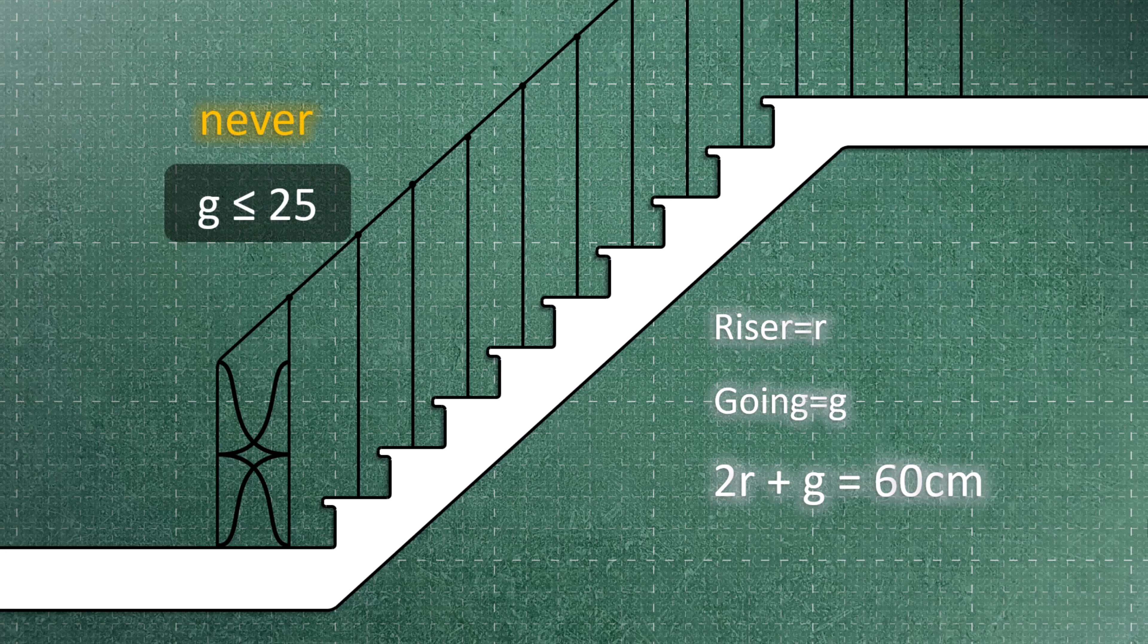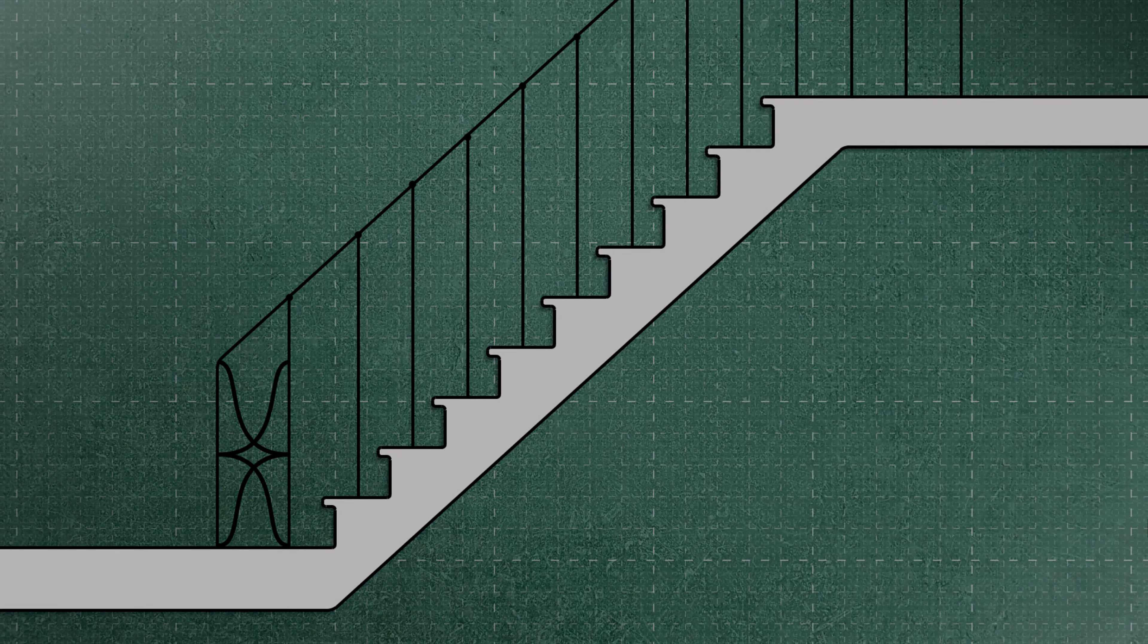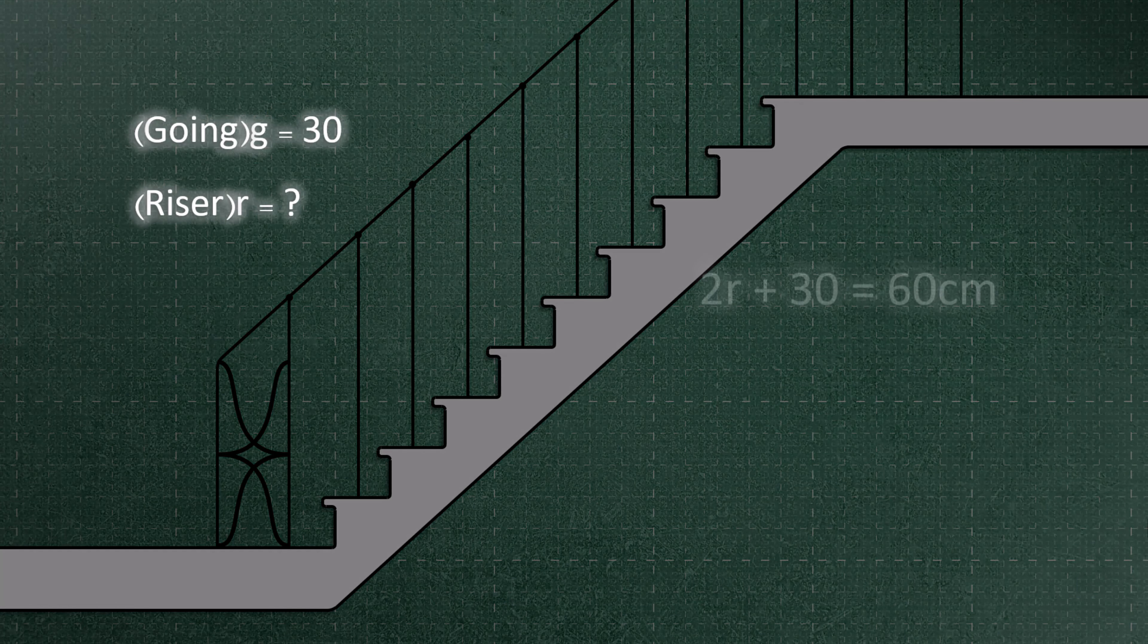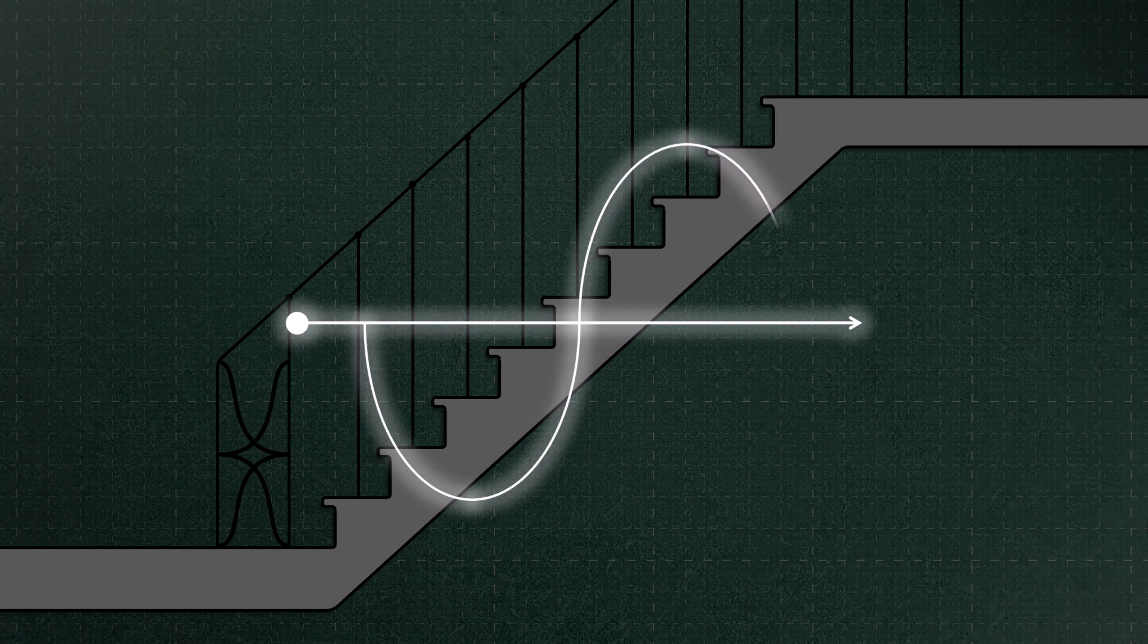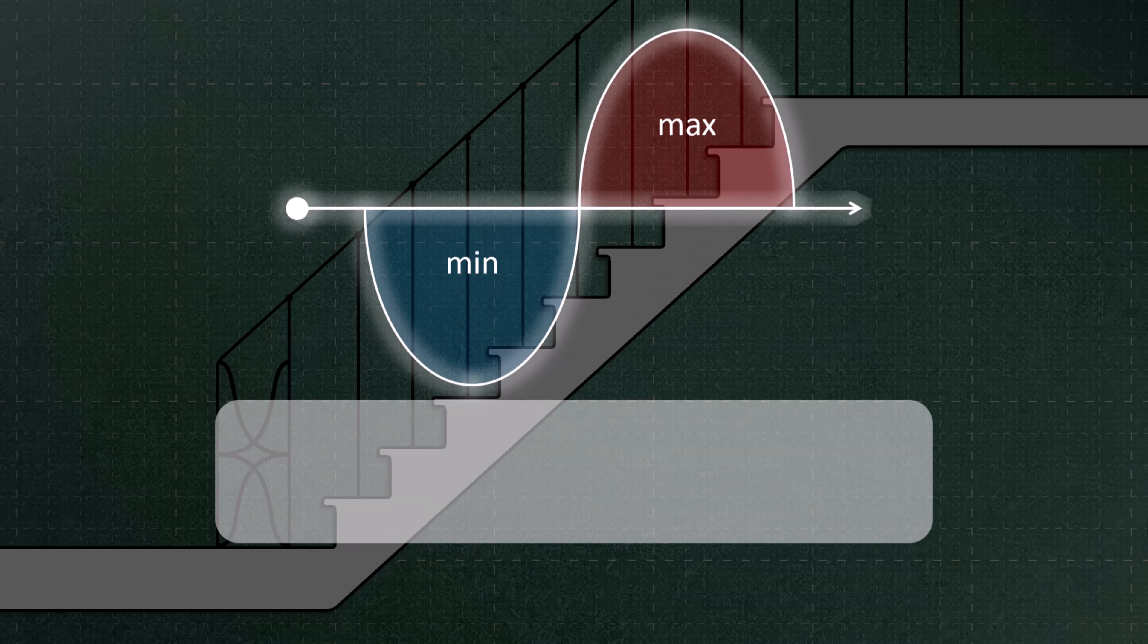According to this formula, for instance, if the going of the stairs is 30 centimeters, then the rise of the stairs will be 15 centimeters. For minimum and maximum use, the formula changes slightly. The sum of twice the rise and the going of the step should fall within the range of 55 to 70 centimeters.